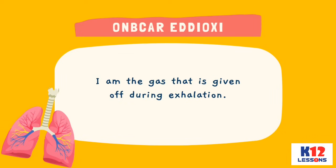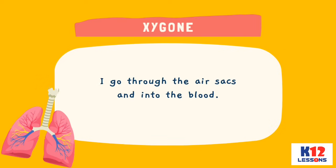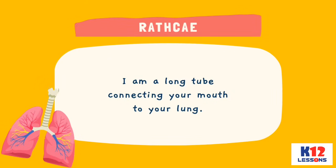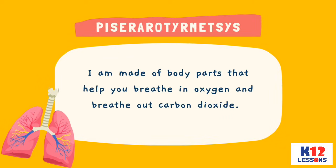Guess the concept being described in each item. Unscramble the letters of the highlighted word to come up with the correct answer. I am the gas that is given off during exhalation. I go through the air sacs and into the blood. I am a long tube connecting your mouth to your lung. I serve as a passageway for both food and air. I am made of body parts that help you breathe in oxygen and breathe out carbon dioxide.